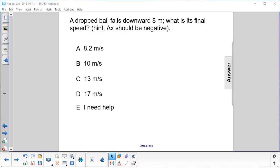A dropped ball falls downward 8 meters. What is its final speed? Here's a hint: Delta X should be negative. Well, why is that?